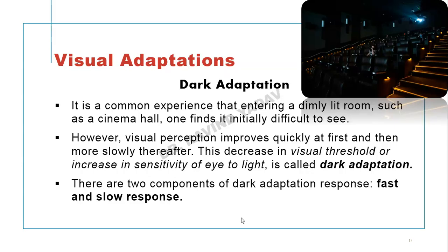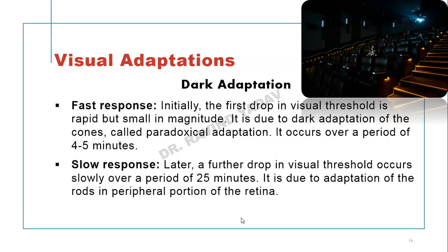There are two components of dark adaptation. The first component occurs over a period of 4 to 5 minutes and is due to adaptation of the rods in the peripheral portion of the retina.